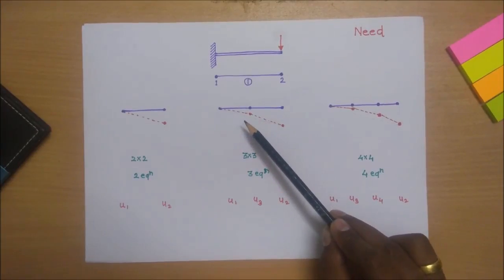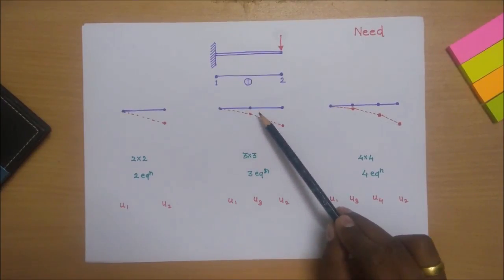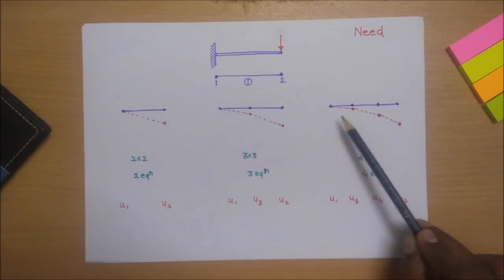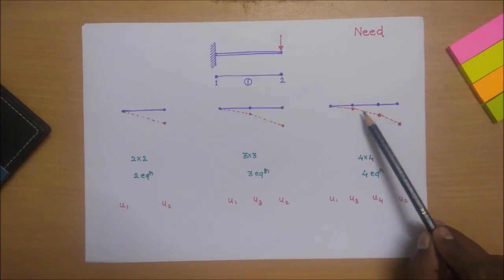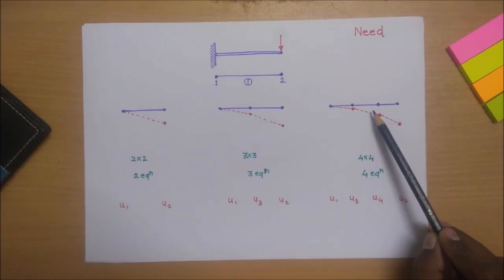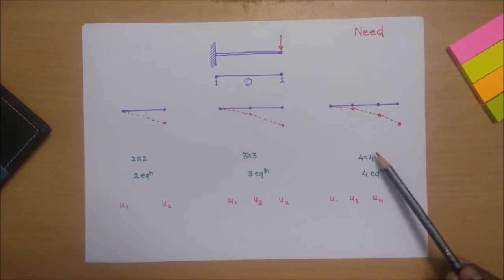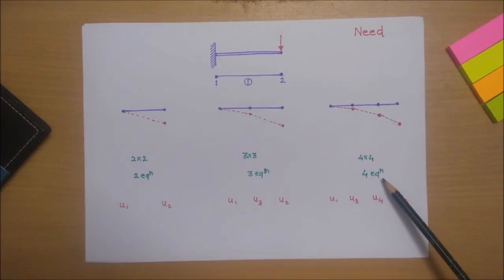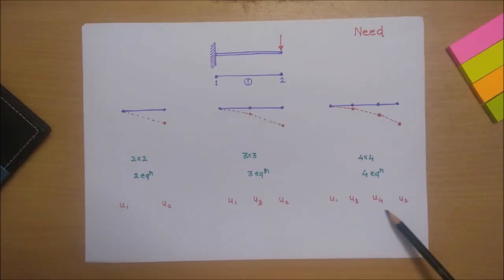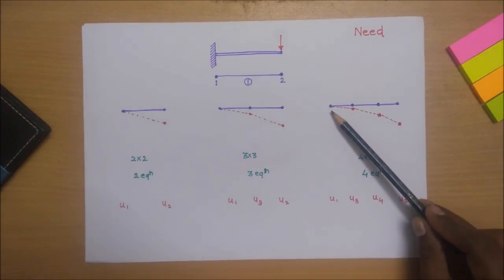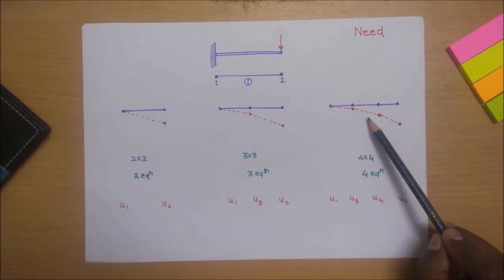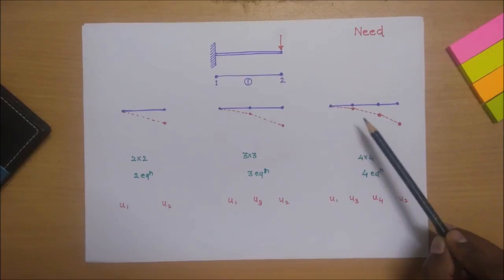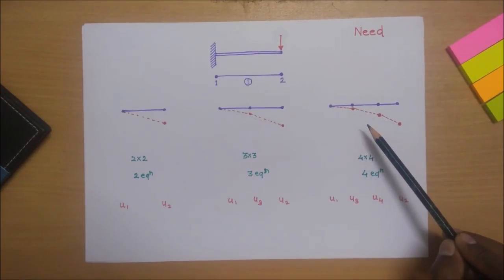If we are interested in more intermediate points, we convert the single element into a cubic element by introducing two more nodes in between. This gives a 4x4 stiffness matrix and four equations to solve, yielding four deformations. After joining these deformations linearly, we get results with even less error. So going from linear to quadratic to cubic progressively reduces the error.